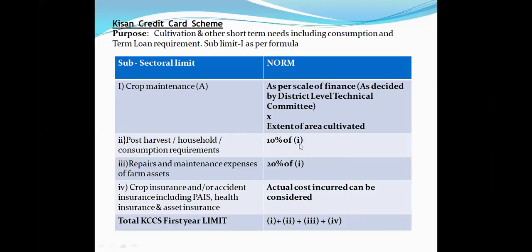To summarize the KCC limit formula: (1) Scale of finance × acreage = crop maintenance; (2) +10% for post-harvest/consumption; (3) +20% for repairs and maintenance of farm assets; (4) +actuals for insurance premium. All four totaled = KCC first year limit. Examiners may ask: who fixes scale of finance (DLTC), what percentage for post-harvest (10%), for repairs (20%), and for insurance (actuals).